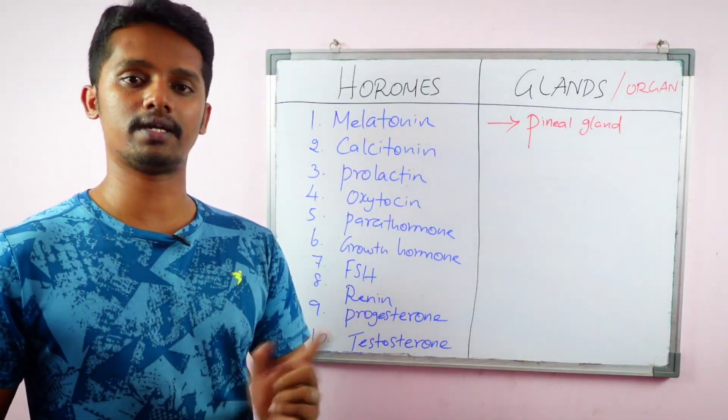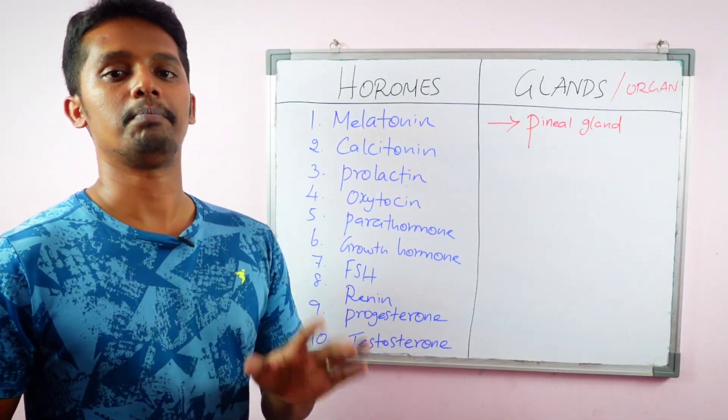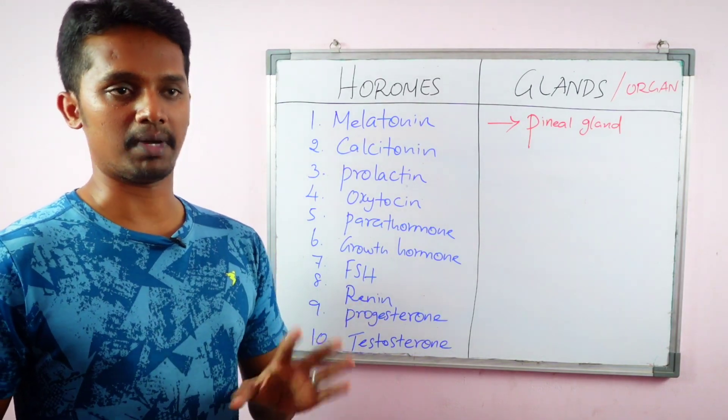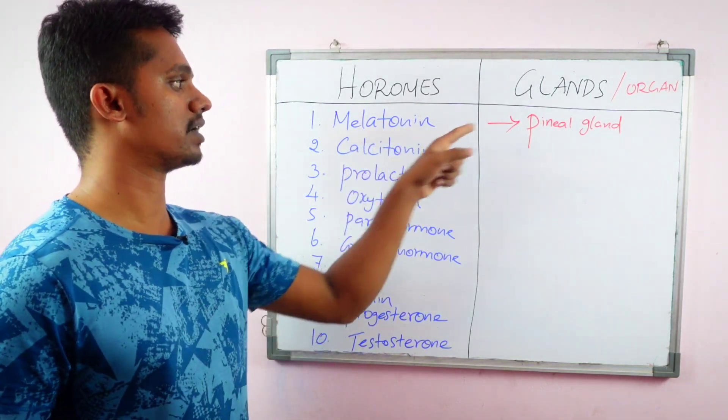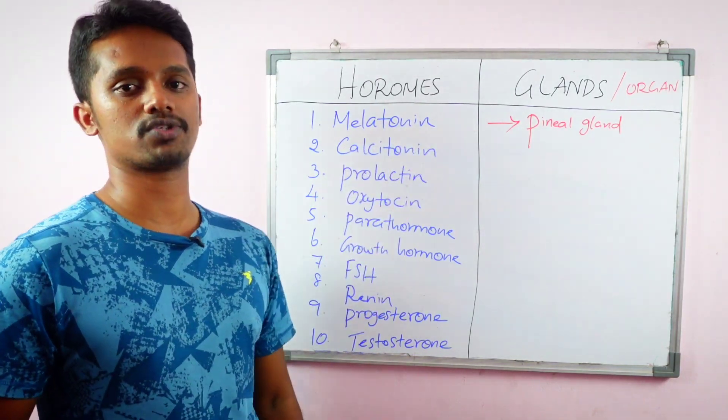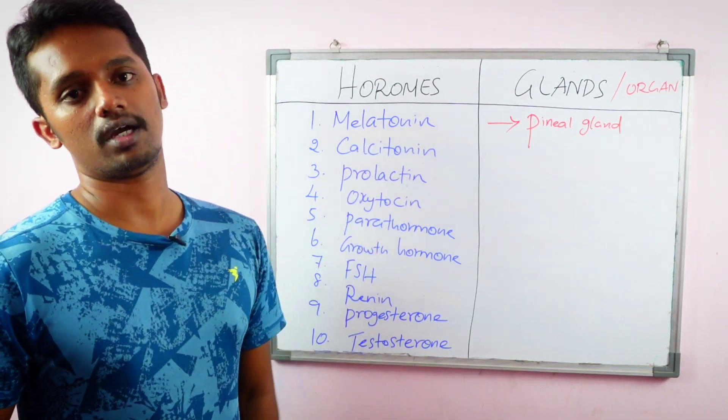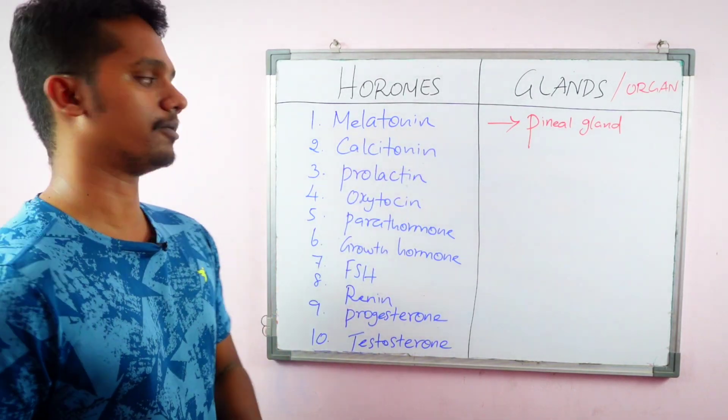Note that Melatonin and Melanin are different. Melanin is a pigment, whereas Melatonin is a hormone produced by the Pineal gland.